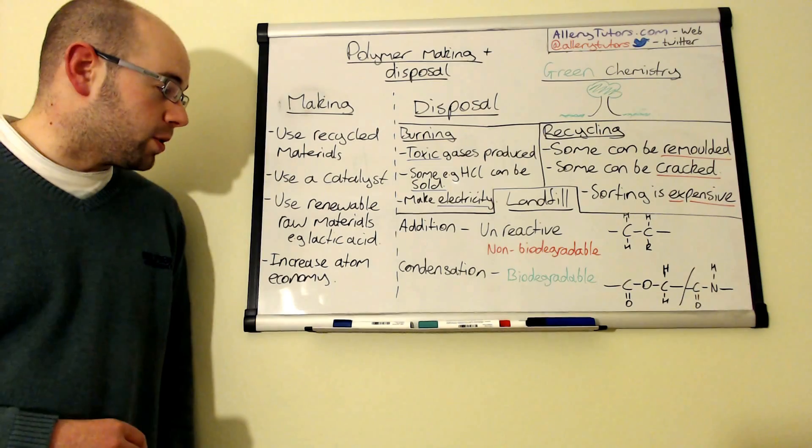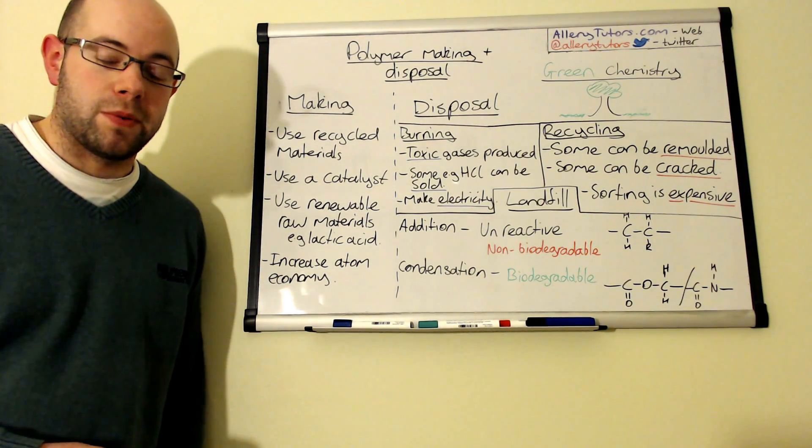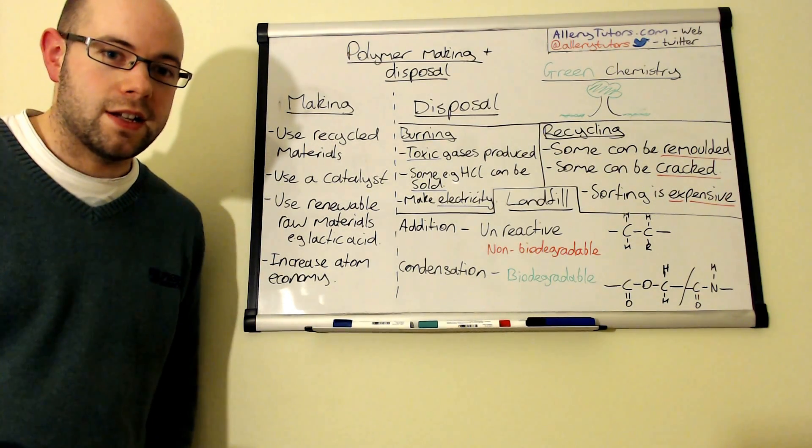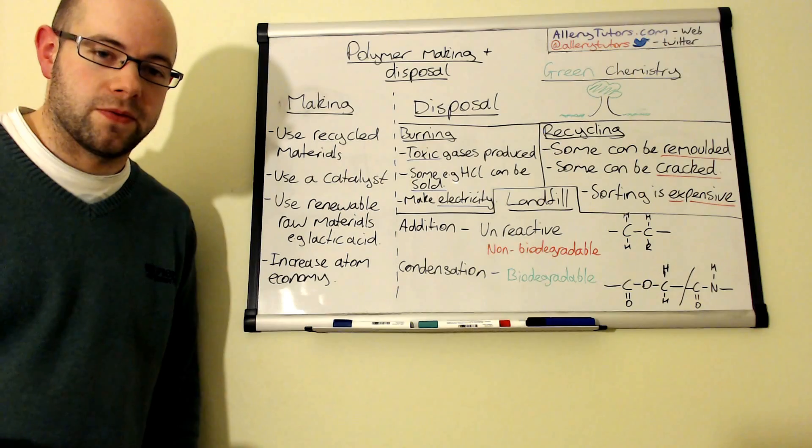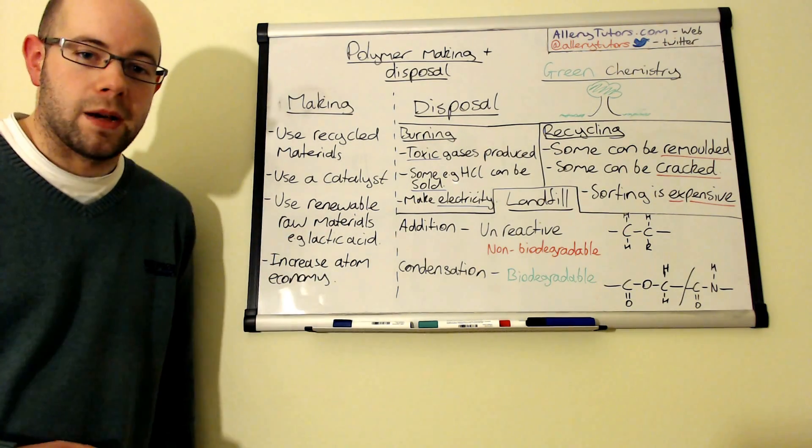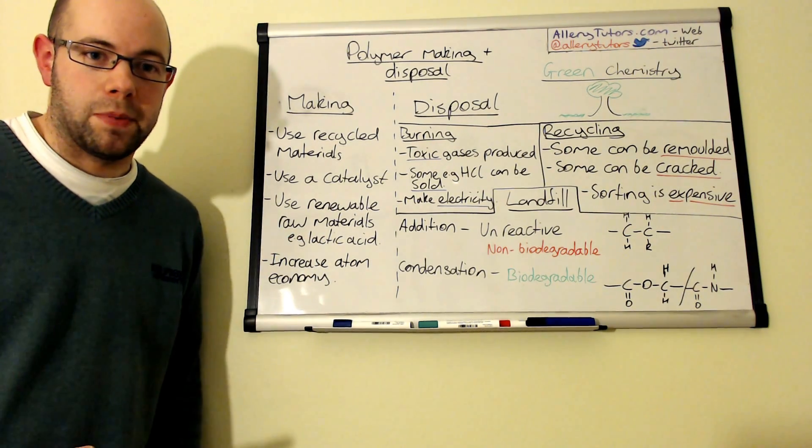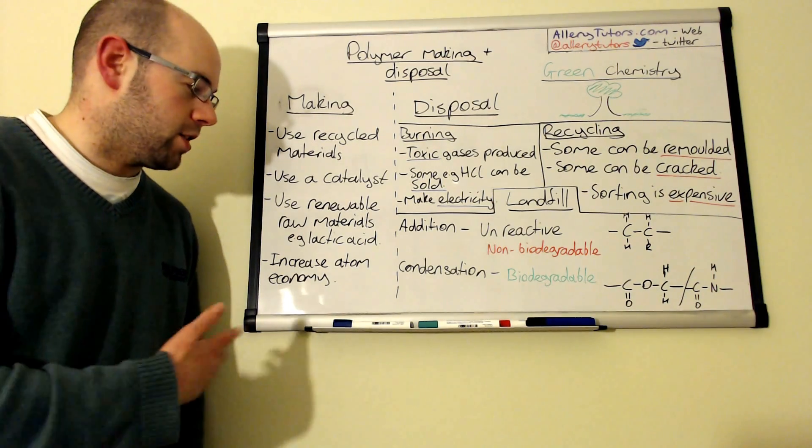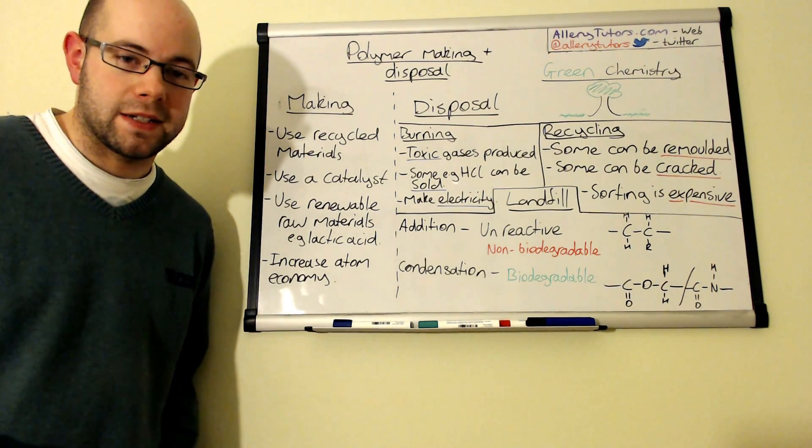Also using more renewable materials, for example the use of lactic acid is a renewable source to make a plastic. You could make polylactic acid from that and that could be used to make carrier bags.